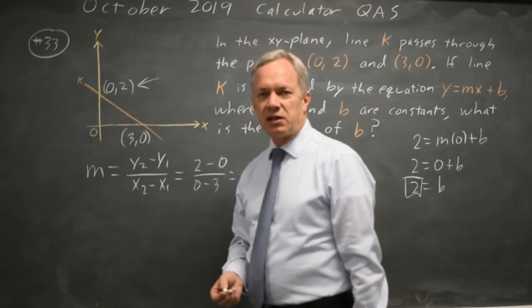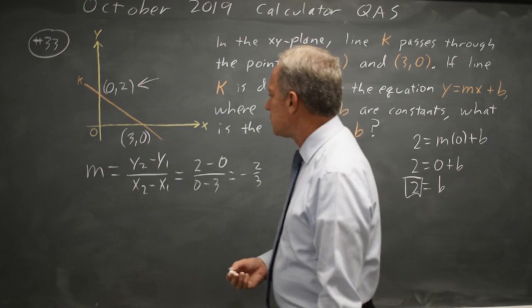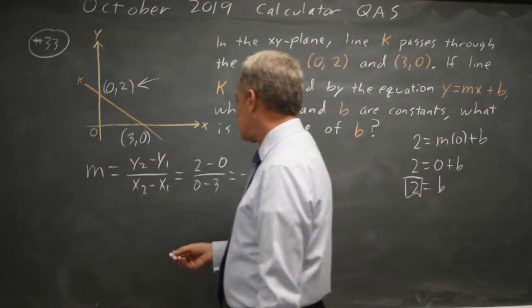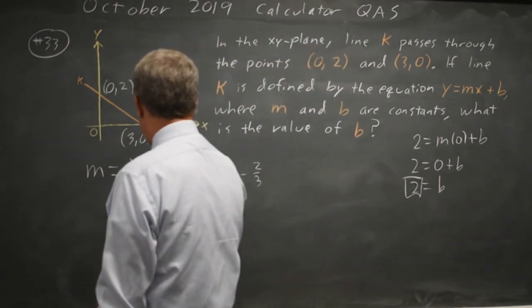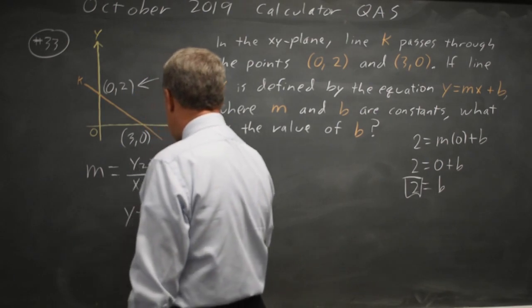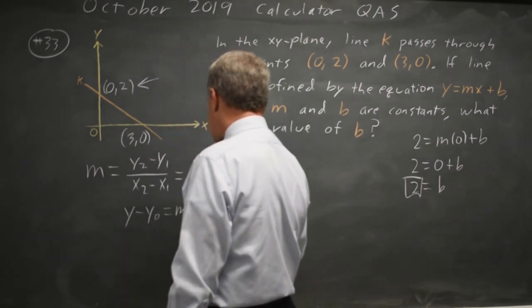And once you have that, you can substitute in a point. I'm going to substitute in the other point. You get y minus y₀ equals your slope m times x minus x₀.